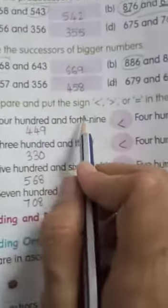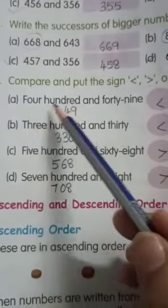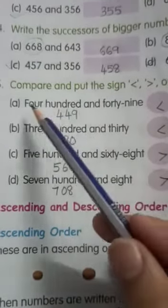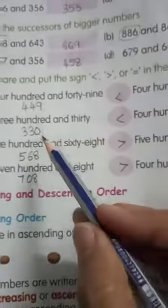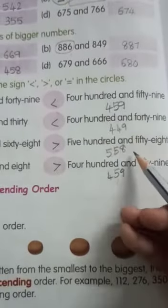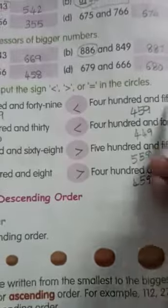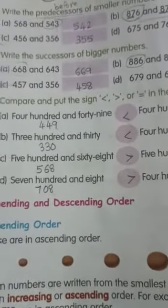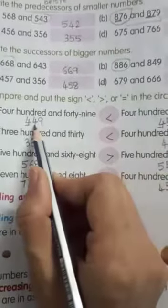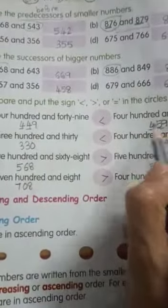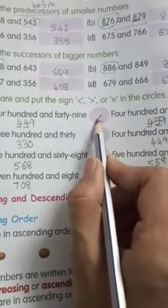Fifth question: compare and put the sign — less than, greater than, or equals to. First, write the number names in numerals. So we get 449 and 330; 568 and 708; 459 and 449; 558 and 459. After writing the numbers in numerals, compare them. The hundreds digit is the same, so compare the tens place. 4 is less than 5, so put the less than sign. In the same way, do question 3.